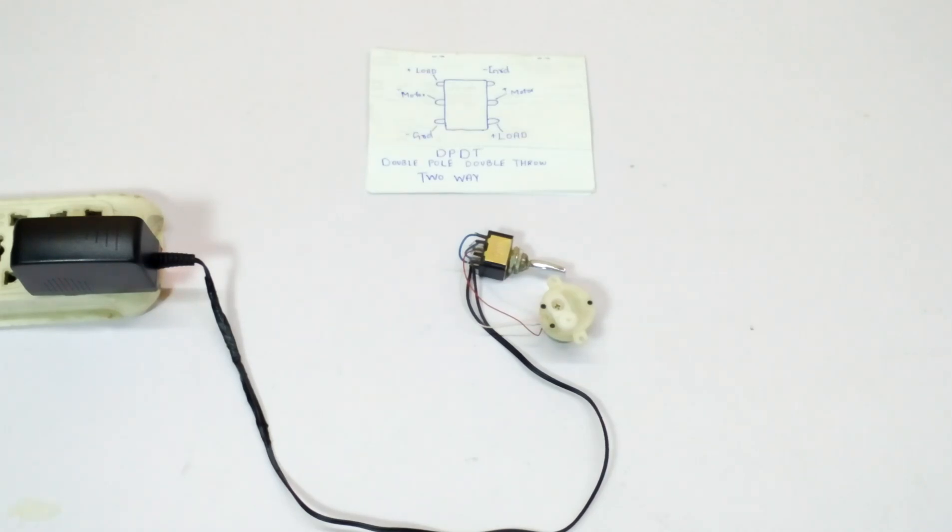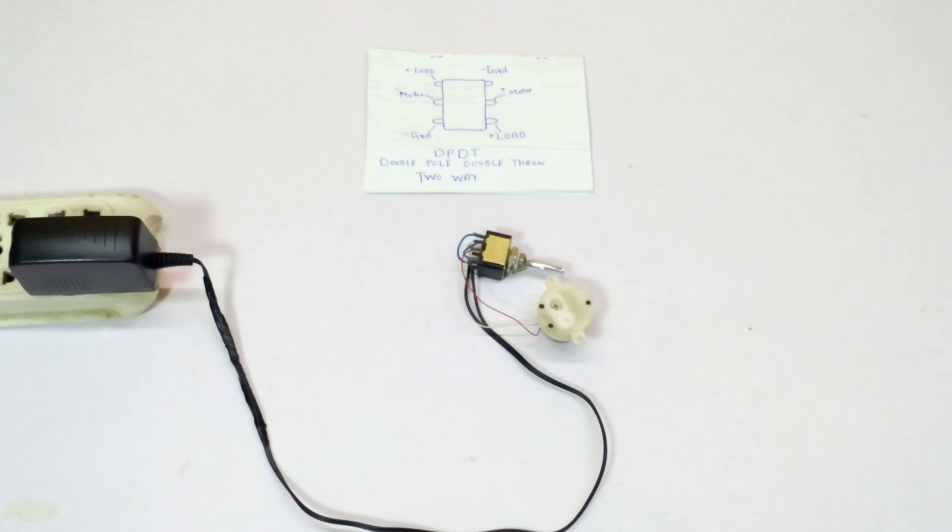Hi guys, my name is Umair and you're watching Umair's workshop. Today I'm going to talk about how to forward and reverse any kind of DC motor with the help of a DPDT switch, which stands for double pole double throw two-way switch.